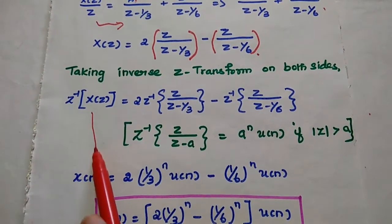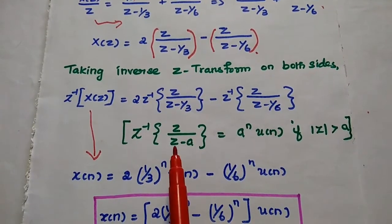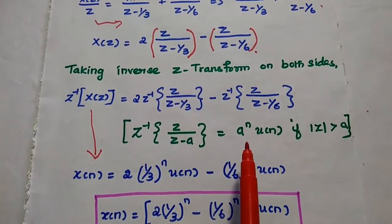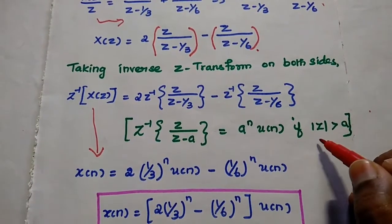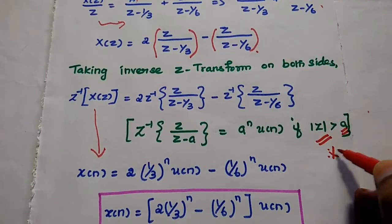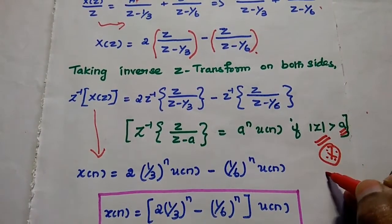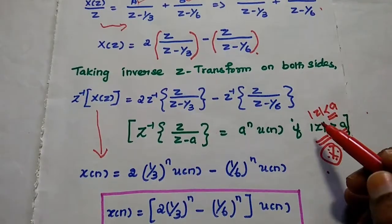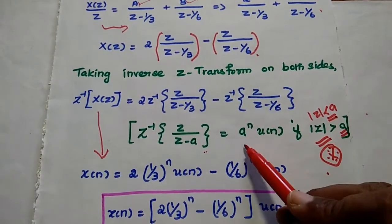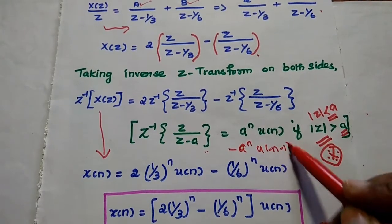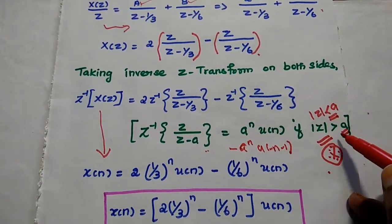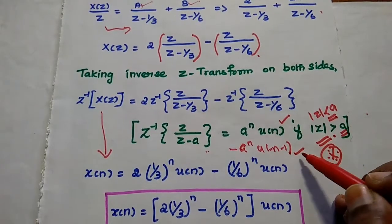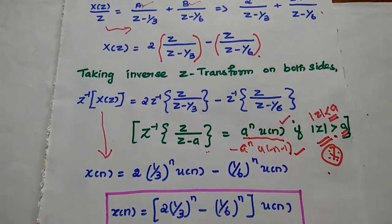Inverse Z-transform of X(Z) is x(n). The formula used here is: inverse Z-transform of Z/(Z - a) = aⁿ·u(n), valid when |Z| > a. If instead |Z| < a, the answer would be -aⁿ·u(-n-1). Since our ROC is |Z| > 1/3, we use the standard formula with u(n).